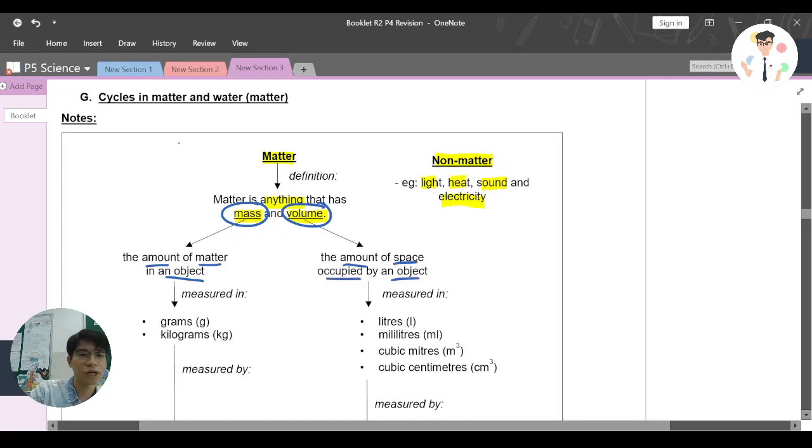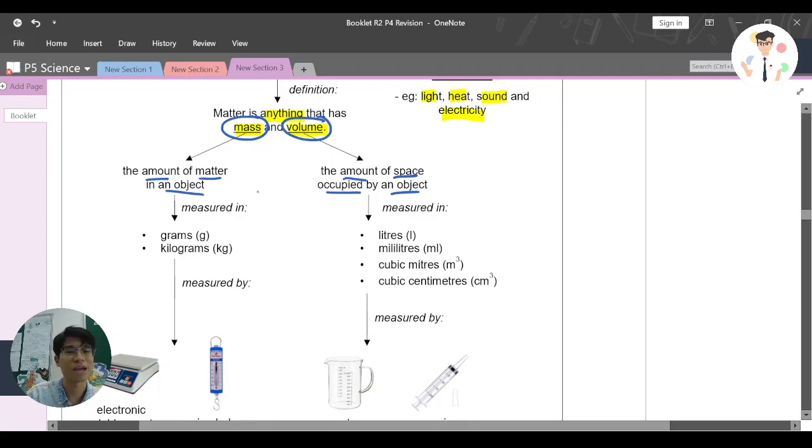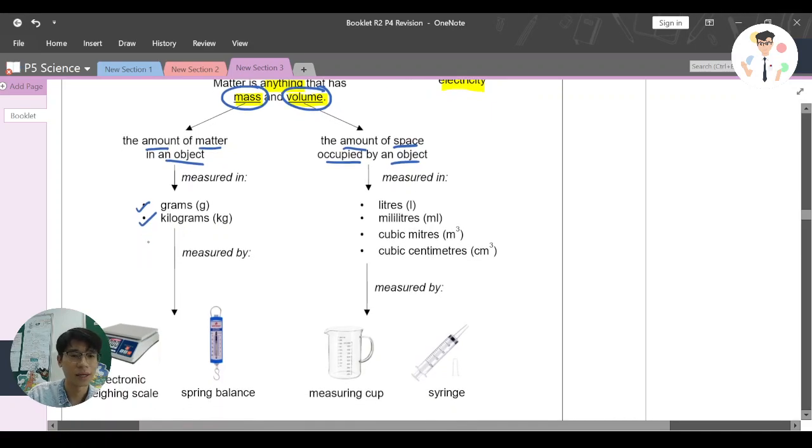Let's try to see how we can measure mass. Mass can be measured in these two units: grams and kilograms. Although they are not the only two, mainly you'll be using these two in our countries. It can be measured by two examples, like electronic weighing scale and spring balance.